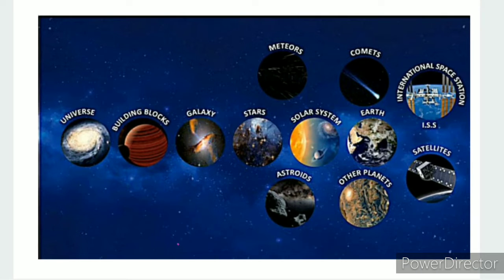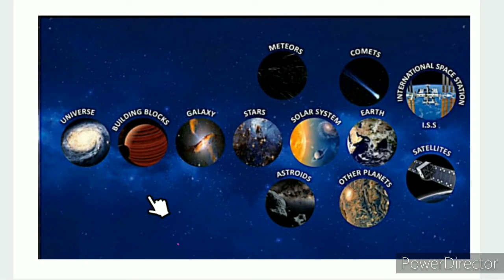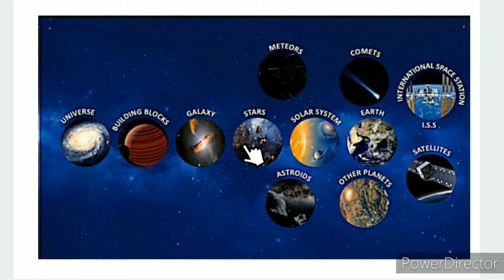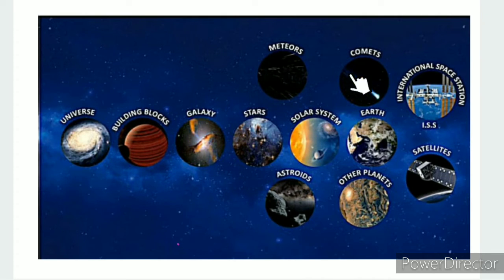The concept map shows the topics in this unit. There are 6 topics. The first topic is Universe — its building blocks, galaxy, and stars. The second topic is the Solar System, which includes comets and asteroids.